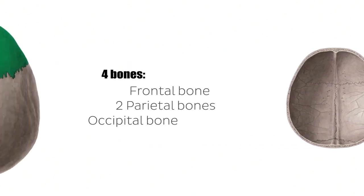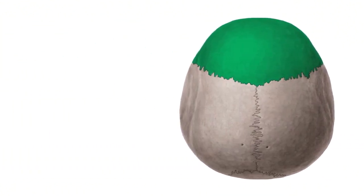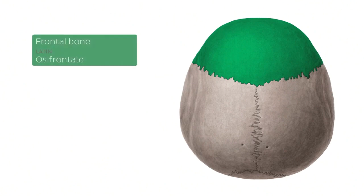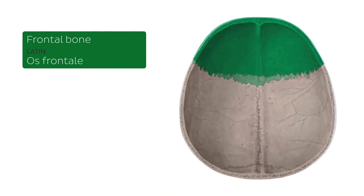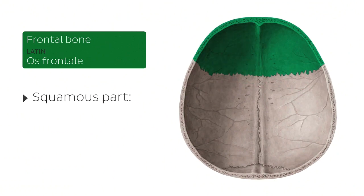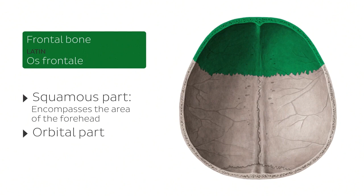Let's start by covering the bones, beginning with this one highlighted in green — we're looking at the superior view of the frontal bone. The frontal bone is one of the bones of the neurocranium, which is the part of the skull that encloses the brain. This bone consists of three parts: the squamous part, which encompasses the area of the forehead, and the orbital part, which you cannot see from these views of the calvaria.